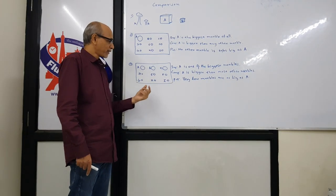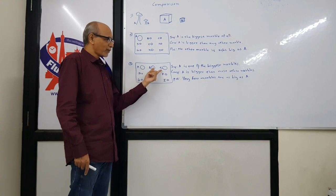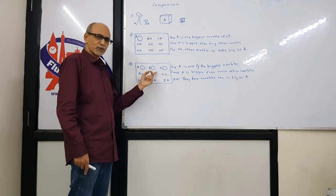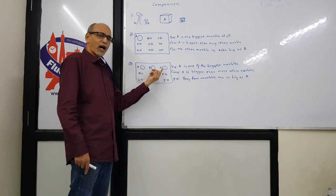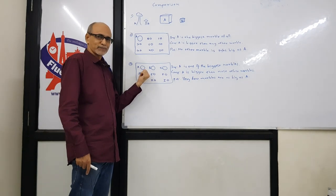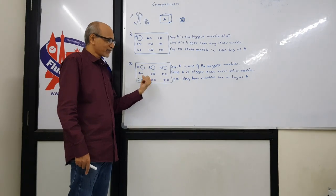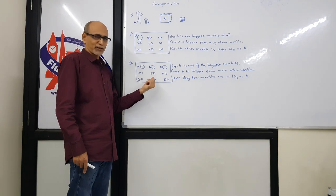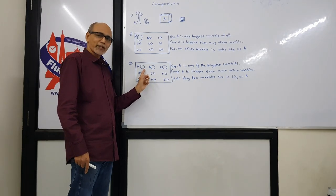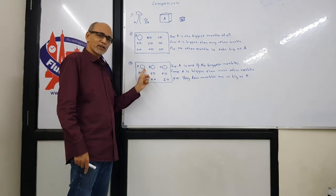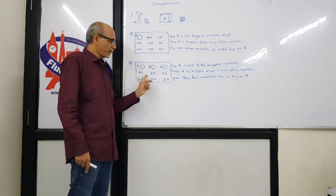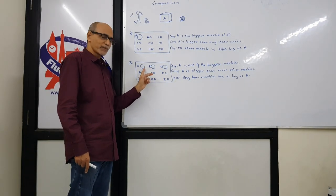In positive degree, we have to say very few marbles are as big as A. All these three sentences convey the same message: A is one of the biggest marbles, A is bigger than most of the marbles, and very few marbles are as big as A.